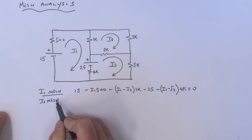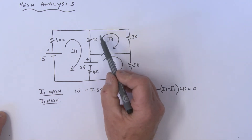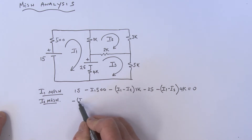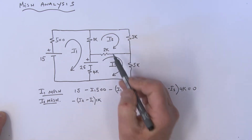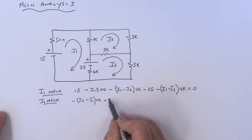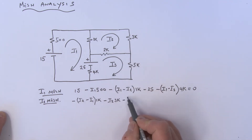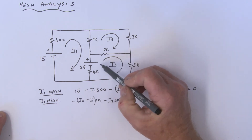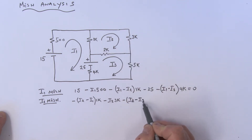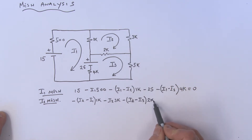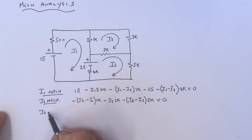Now let's look at the I2 mesh. Starting here, going in this direction, we have a minus - open up a bracket - this is I2 minus I1, multiplied by 1k. Next component, the 3k: that's a minus I2 times 3k. Then the last component, the 2k: that's a minus, open up a bracket - I2 minus I3 - closing the bracket times 2k, all equal to 0. That's our second mesh equation.